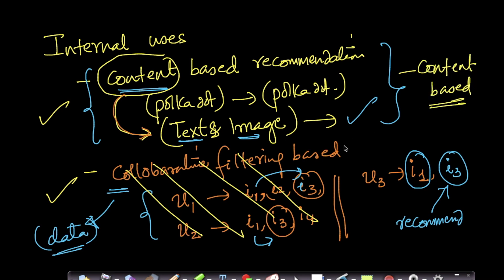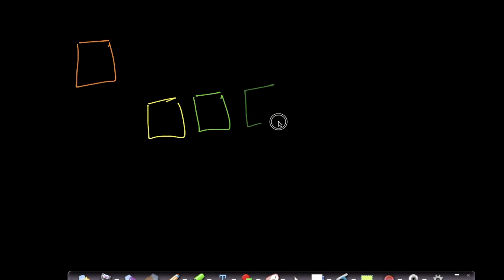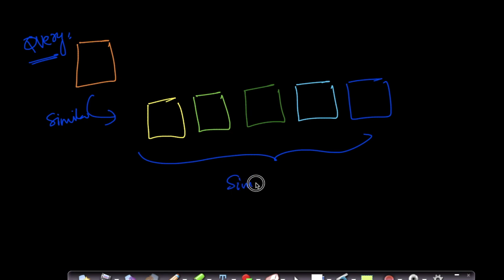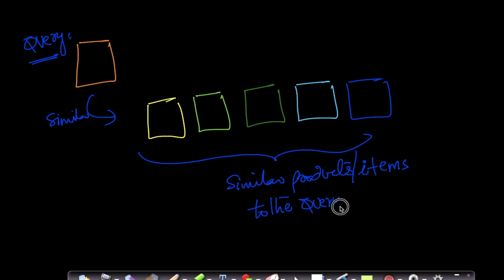So just to be clear about our task: given a product — called the query product — I want to recommend similar products to the user. All these recommended products are different from each other but similar to the query product. Our objective is to try multiple techniques using text and images to recommend these similar products. That is the problem we are trying to solve as part of this workshop.